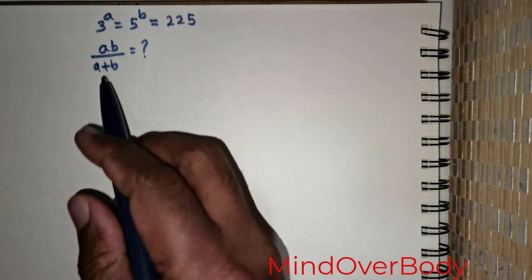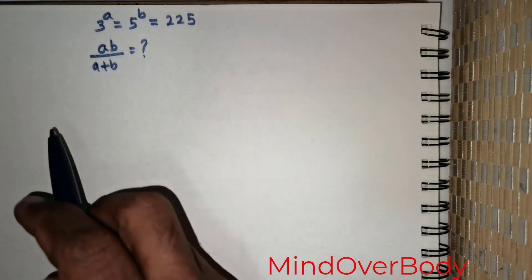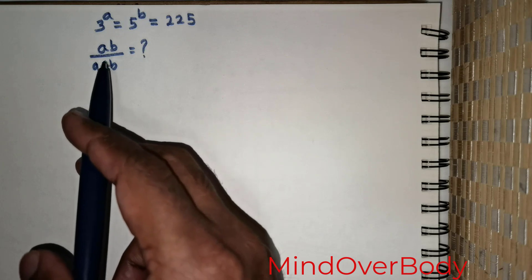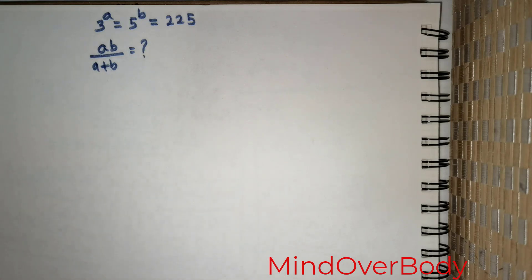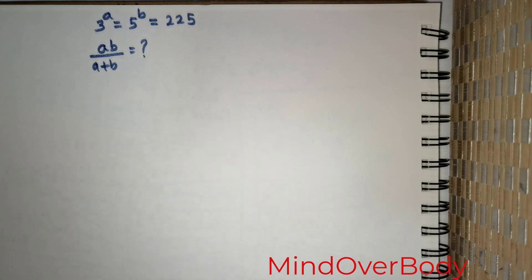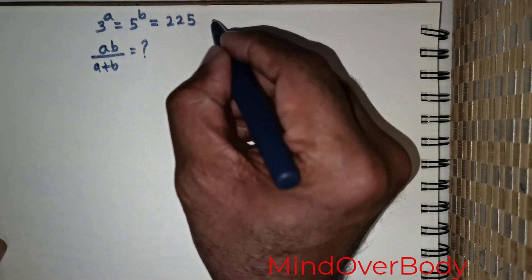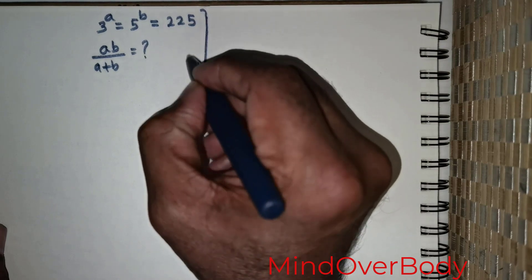Welcome students. We are given this question: 3 raised to the power a is equal to 5 raised to the power b, which is equal to 225, and we are expected to evaluate ab over a plus b. I will be showing you four different methods to solve the same question, and you can also put your methods in the comment section if you come across anything different.